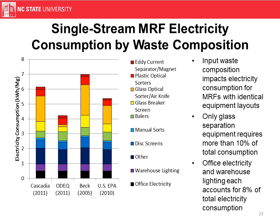This colorful figure illustrates how waste composition can alter MRF electricity consumption — shown here for the single stream MRF only. Glass separation equipment accounts for 10% of MRF electricity consumption, and each other type of separation equipment accounts for less. Office electricity and warehouse lighting each account for 8% of total electricity. We see an almost 100% swing in electricity consumption per megagram based on composition, largely due to which pieces of equipment are included. As expected, the ODEQ waste stream, which represents an Oregon waste stream, has much less glass, hence the much smaller glass breaker screen and glass optical sorter energy requirement.